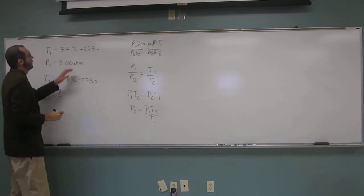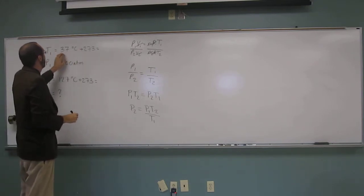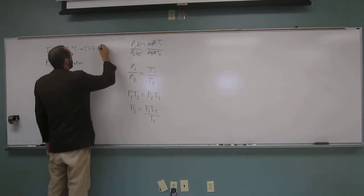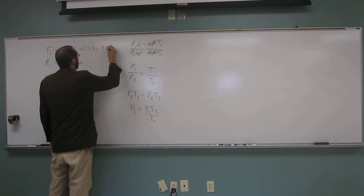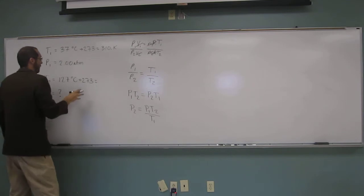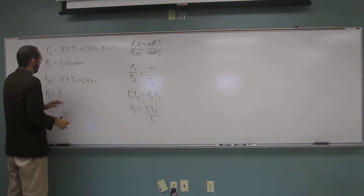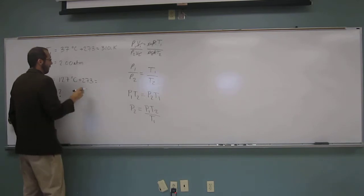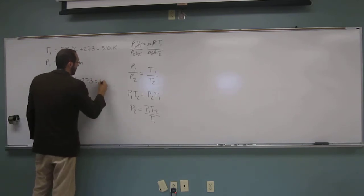So 273 plus 37 is going to be 310 Kelvin, and 273 plus 127, so that's 300, 400 Kelvin.